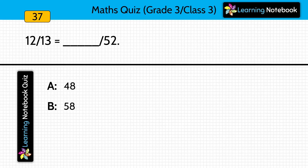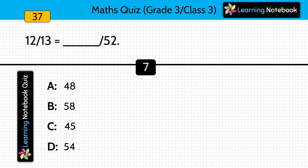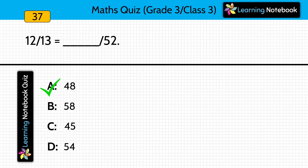12/13 equals to dash/52. Options: 48, 58, 45, or 54. Answer is 48, because 48/52 on simplification gives us 12/13. So these are equivalent fractions.